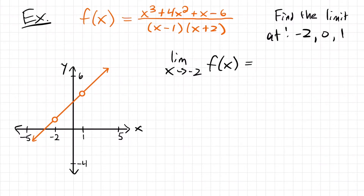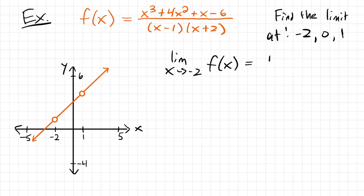We're going to look at both sides and see what happens as we approach x equals negative 2. Starting from the right side and following down the function until we get to x equals negative 2, we are approaching the value y equals 1. Then if we start from the left side, we also find ourselves at y equals 1 when x is negative 2. Both sides agree — right side is 1 and left side is 1, so the limit is also 1.